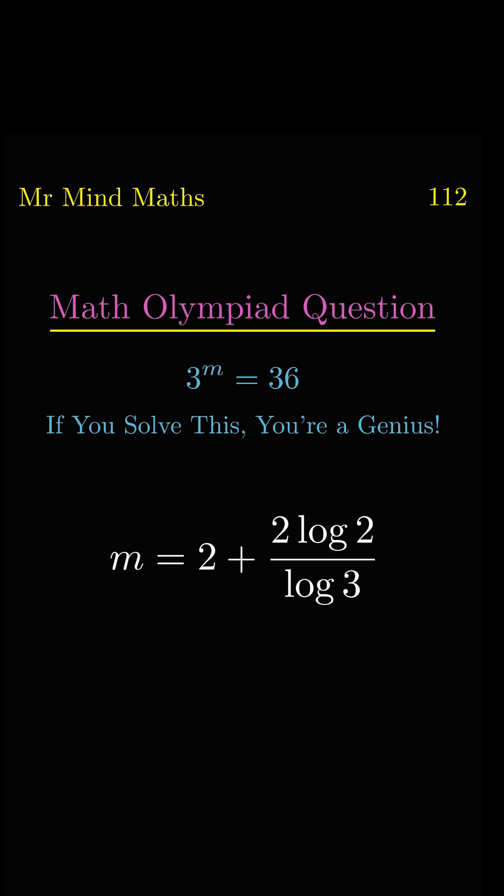Now here we will use another log property so that the denominator log will disappear and 3 will become base of log 2. So finally we get m equal to 2 plus 2 log base 3 of 2, which is the final answer.